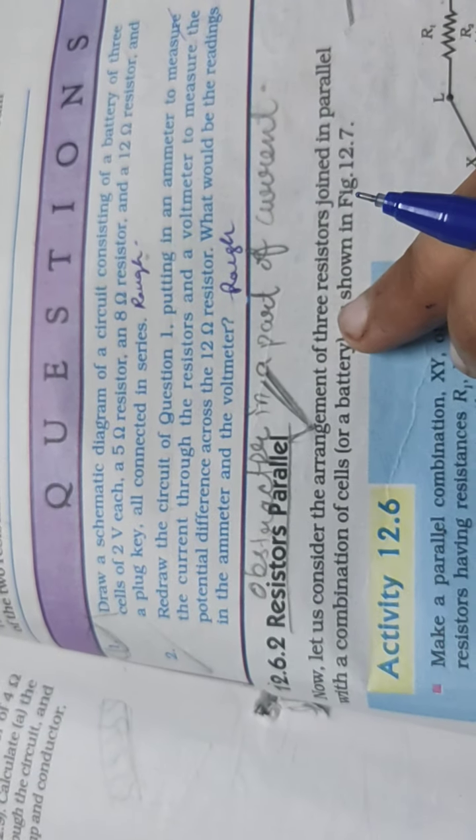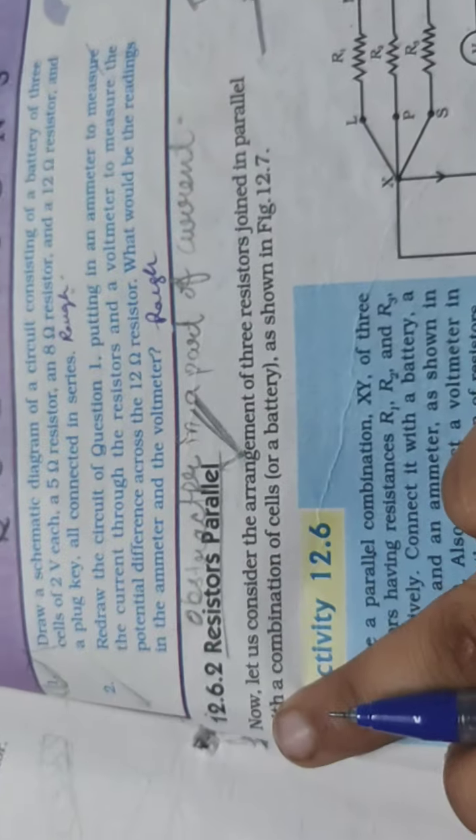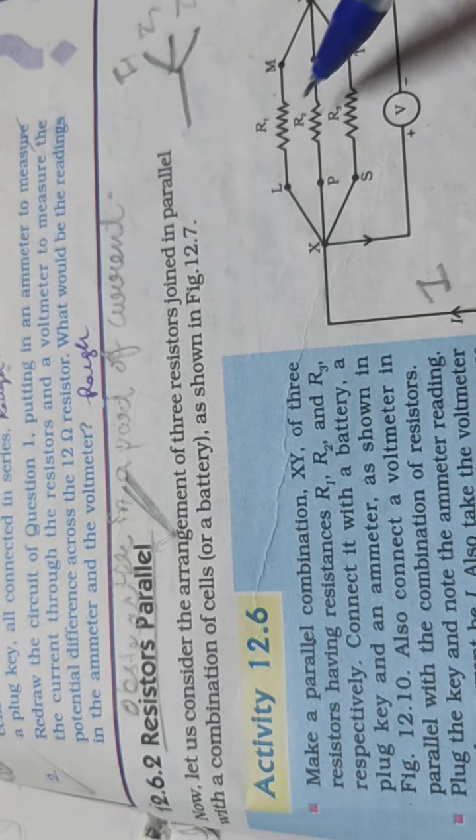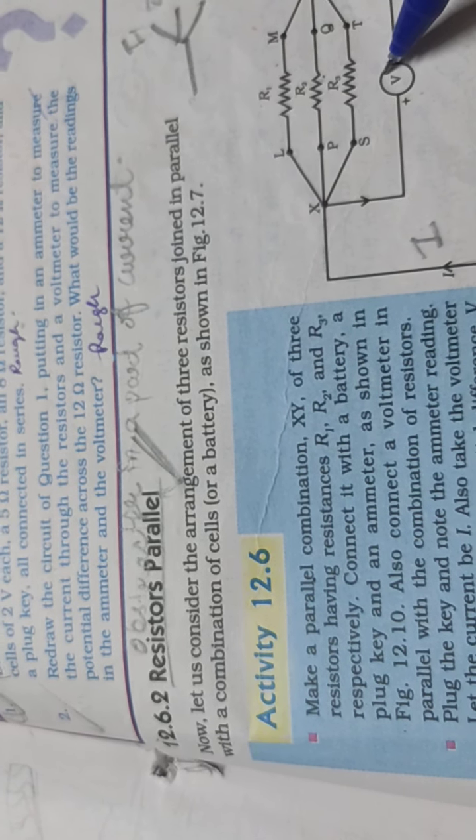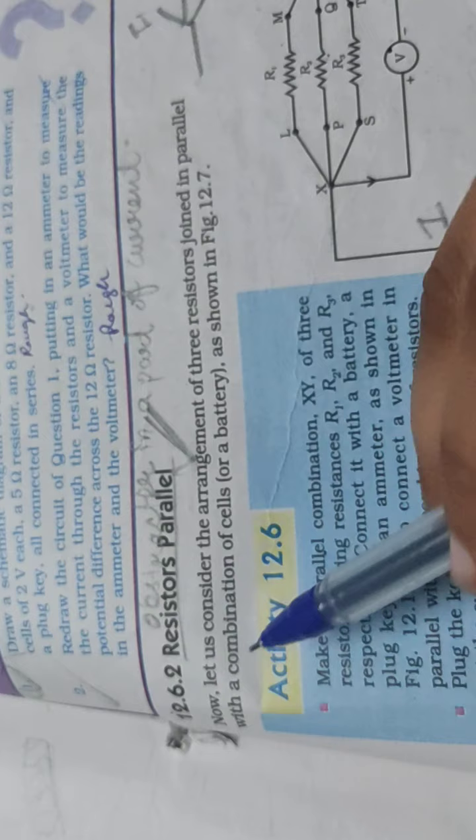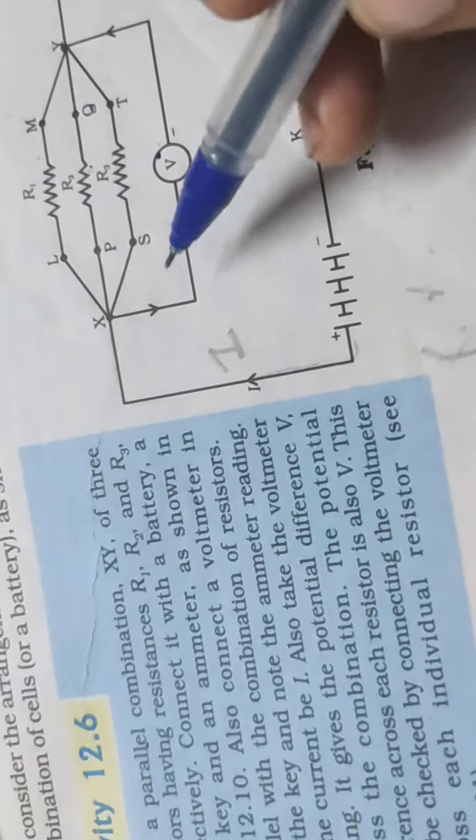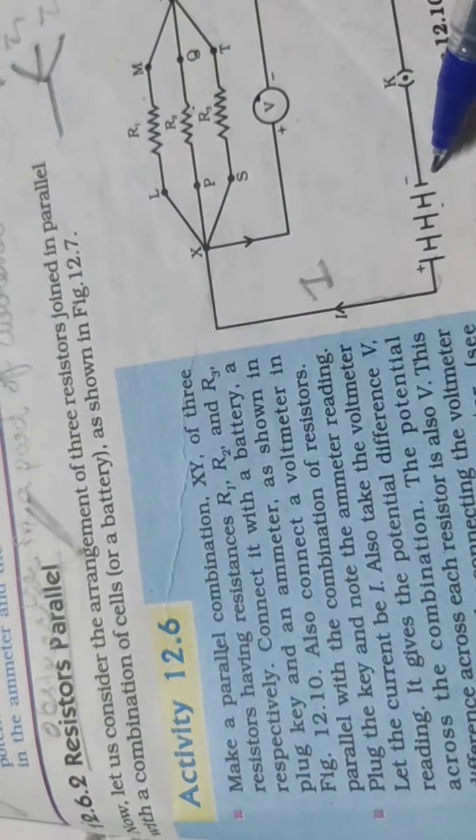Let us consider the arrangement of three resistors joined in parallel. So there are three resistors in parallel condition joined in combination with the combination of cells and battery attached. So let's firstly draw this diagram.